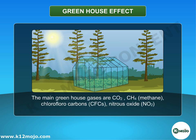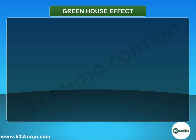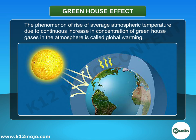The main greenhouse gases are CO2, CH4 methane, chlorofluorocarbons CFCs, and nitrous oxide NO2. The phenomenon of rise of average atmospheric temperature due to a continuous increase in concentration of greenhouse gases in the atmosphere is called global warming.